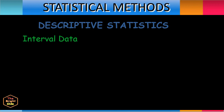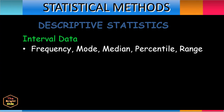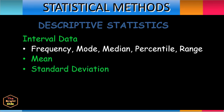For interval data, the descriptive statistical tools include those used in nominal and ordinal data — frequency, mode, median, percentile, and range. In addition, there are other descriptive statistical tools used for interval data, which include the mean, which measures the average of the interval data sample, the standard deviation, which illustrates the spread of data relative to the mean, and variance, which is used to illustrate how much spread exists in the data.